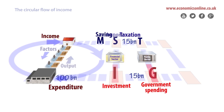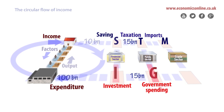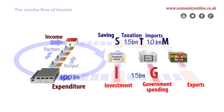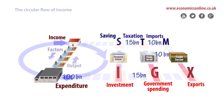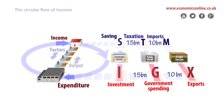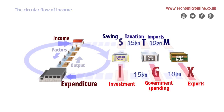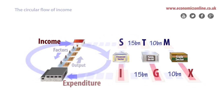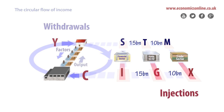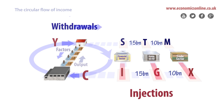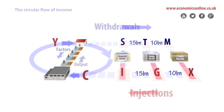Finally, spending on imports reduces the domestic income circulating, while exports is an injection into the domestic circular flow. Payments between countries for goods and services may balance, as in this case, with 10 billion of imports balanced by 10 billion of exports. However, import spending may be greater or less than export revenue, creating a current account deficit or surplus.